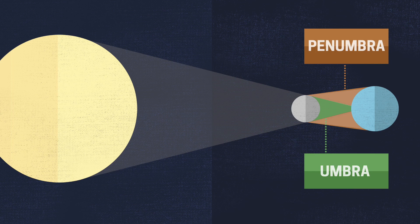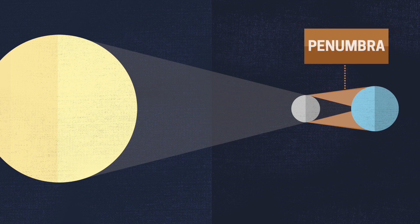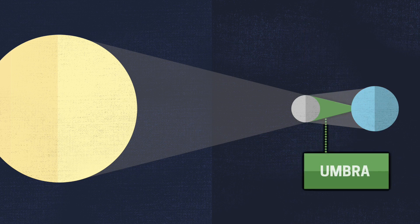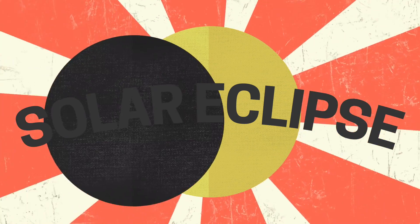Places on Earth that fall within the penumbra will experience a partial solar eclipse, because the Sun, Moon, and Earth are not perfectly aligned, and places within the umbra will see a total solar eclipse.